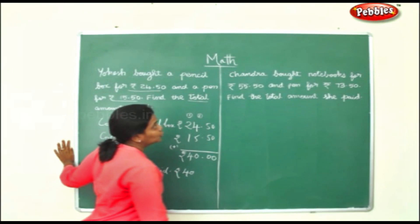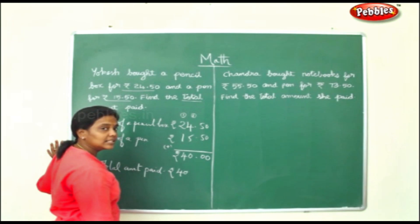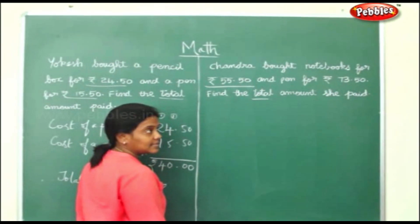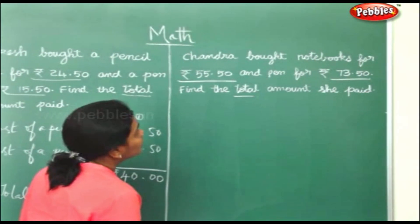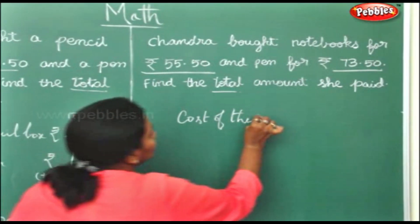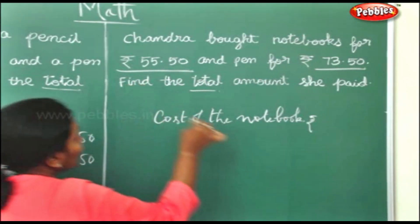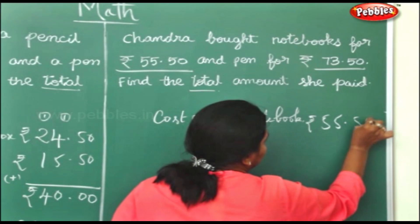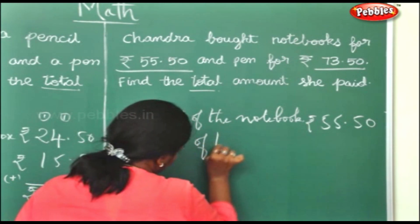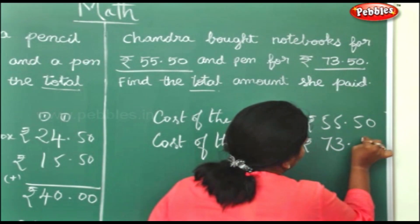Next sum: Chandra bought notebooks for rupees 55.50 paise and a pen for rupees 73.50 paise. Find the total amount she paid. 'Total amount' means addition. Cost of the notebook is rupees 55.50. Cost of the pen is rupees 73.50.